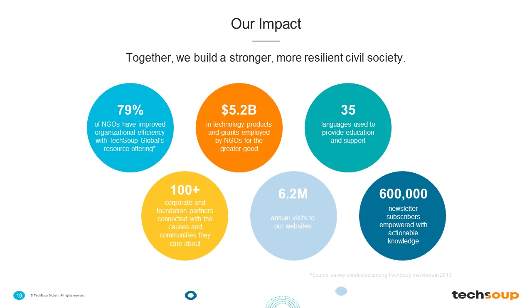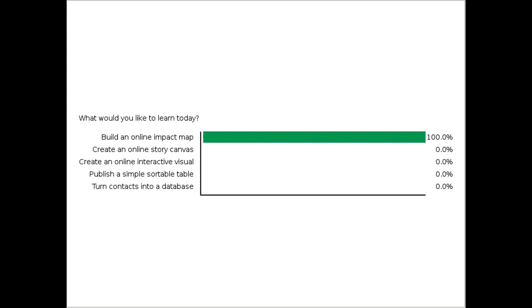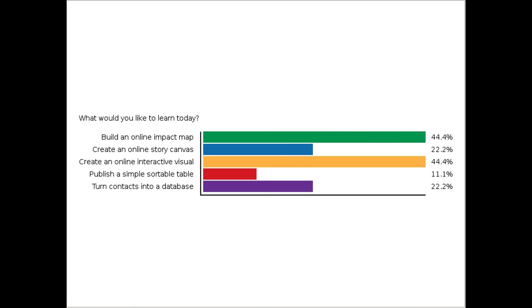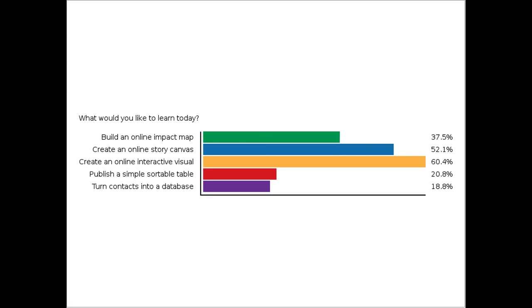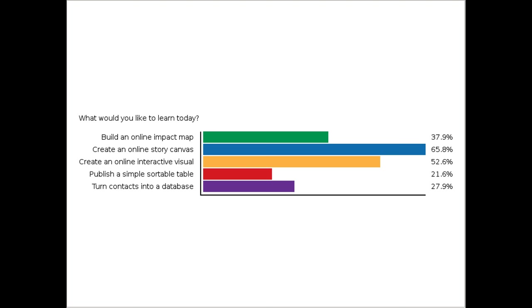Before I turn this over to Alex, I'd like to ask you a live poll question. We'd like to know what specifically you'd like to learn today: build an online impact map, create an online Canvas story, create an interactive visual, publish a simple sortable table, or turn contacts into a database. Answering this will help Alex customize his presentation today. Those responses are just coming in — looks like online story Canvas is leading. That's 64-65% who would like to create an online story Canvas, closely followed by creating an online interactive visual.